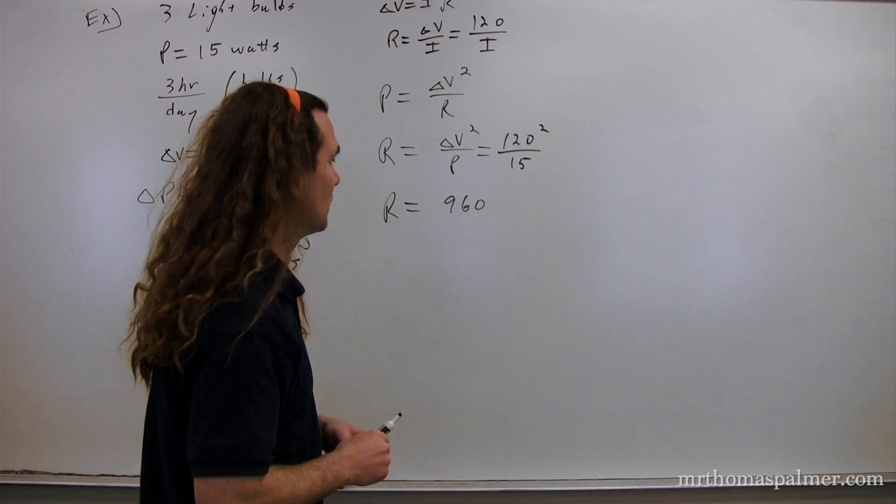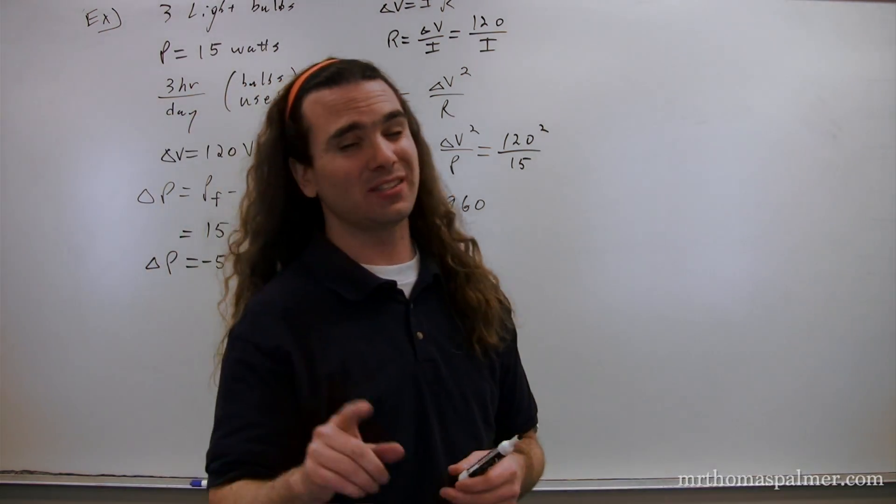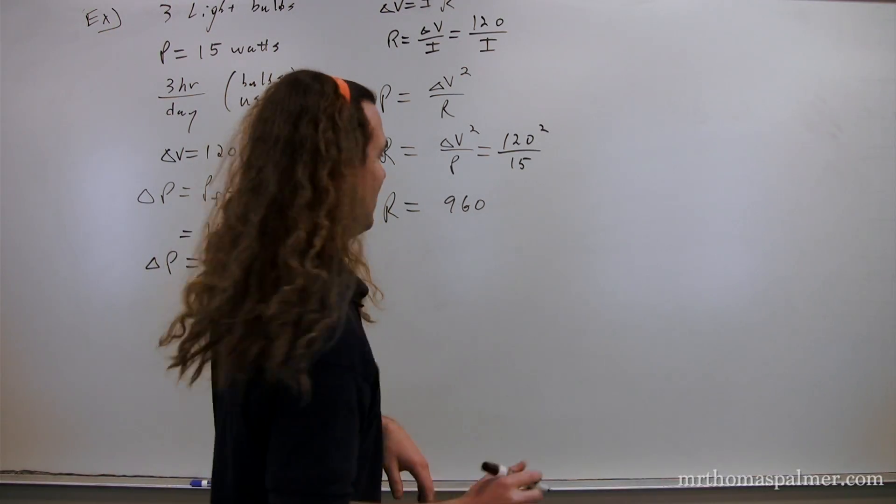960 what, Billy? Ohms. That's right. Ohms. Bobby, what's the symbol for ohms? An upside down horseshoe because all the luck fell out of it. Because it can't hold soup, for example. Right, Billy? Yep. Very good. An upside down horseshoe.